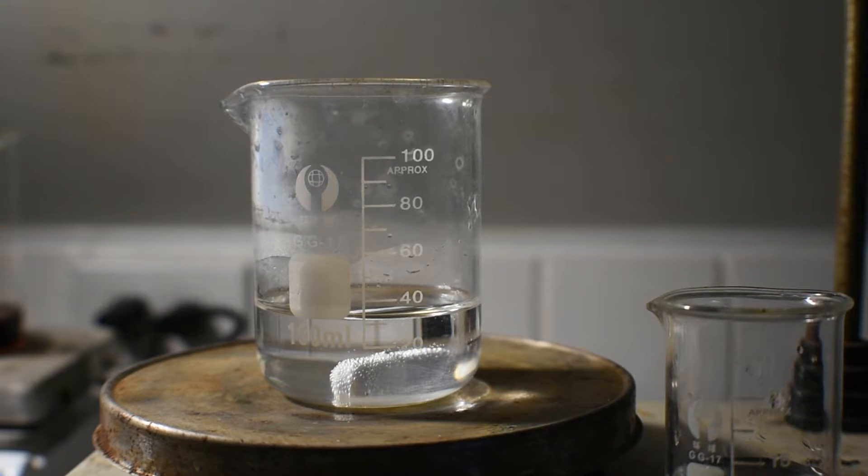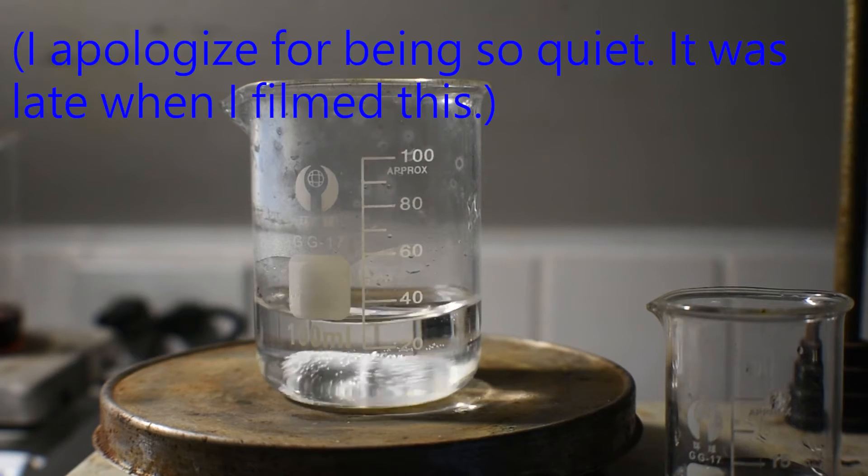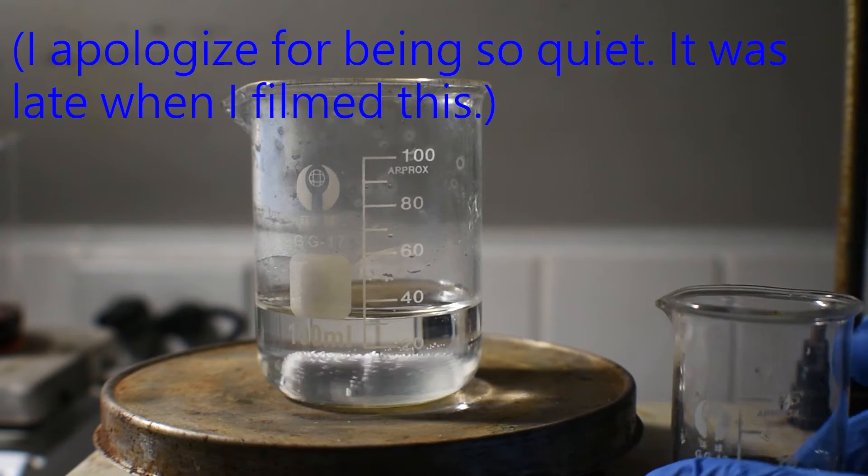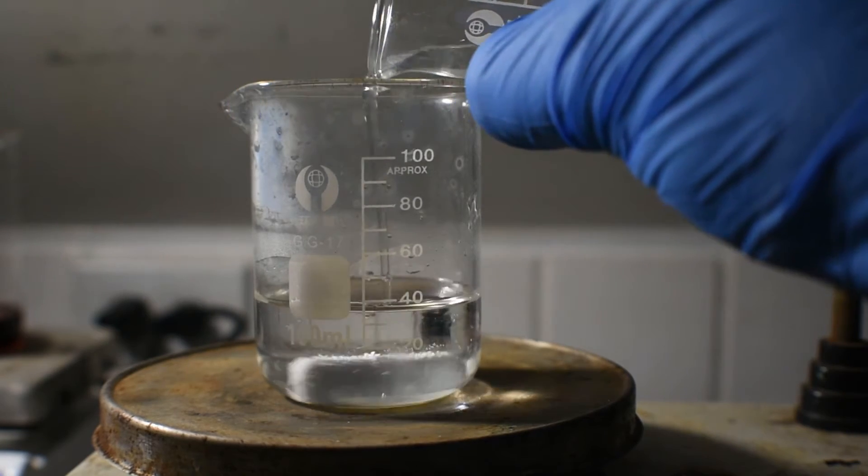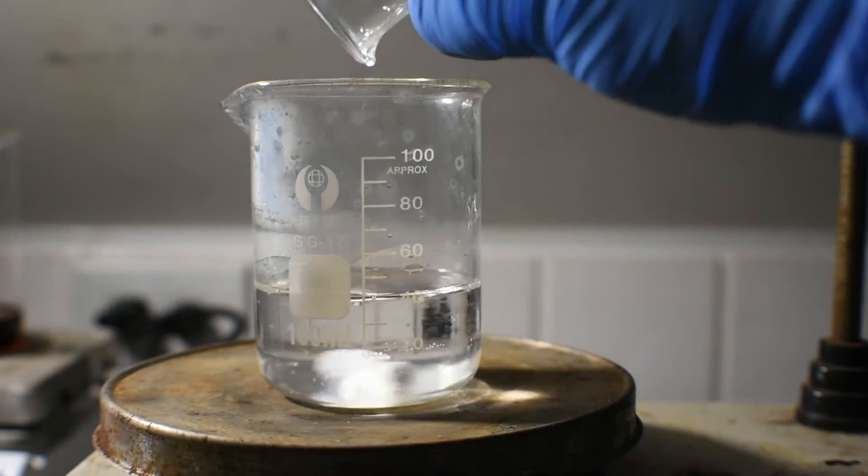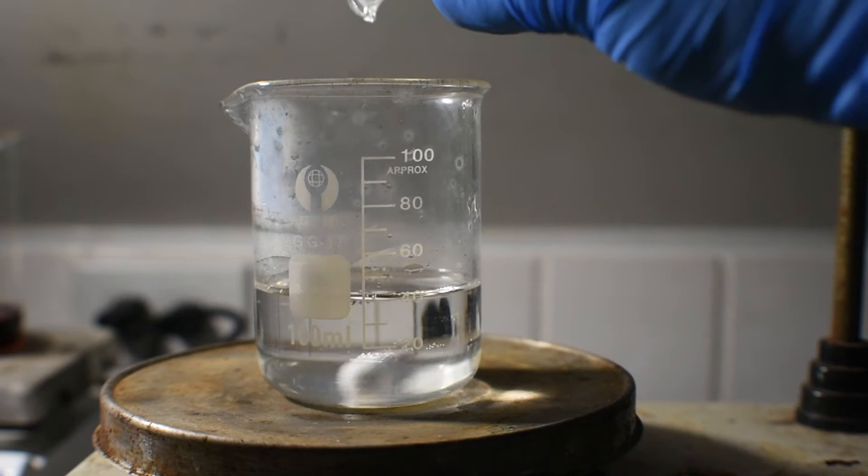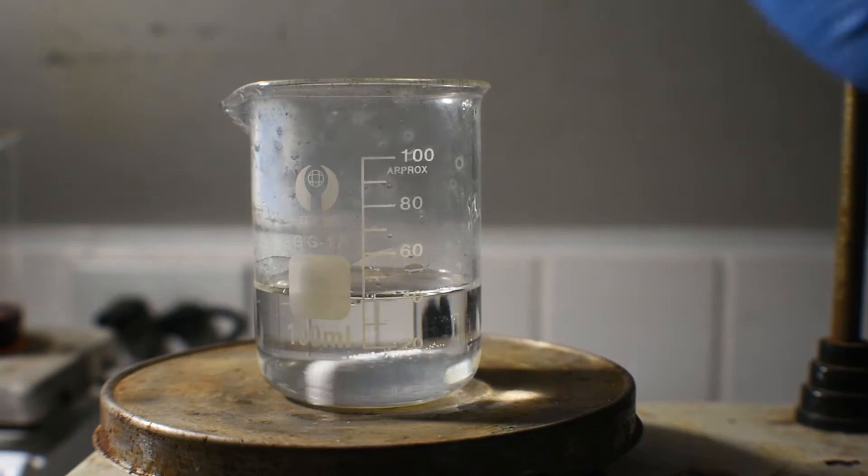Now I'm going to put this in an ice bath to cool down. Once the ethylenediamine solution is nice and cool, with stirring, I'm now going to add the 6 molar hydrochloric acid. This will only partially neutralize the ethylenediamine, which is what we want.